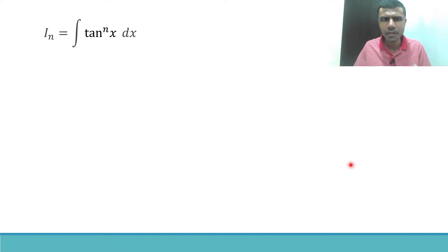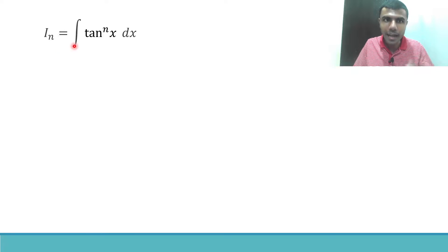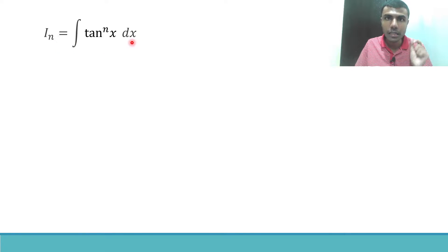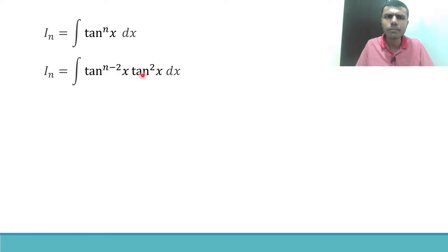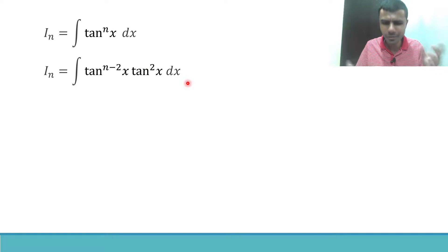Without any delay, let's get into the question. The first step is to take the given integral as I_n. I_n is nothing but the integral of tan^n x dx. Now this tan^n x I'm going to write it as tan^(n-2) x into tan² x.